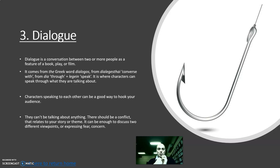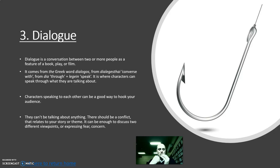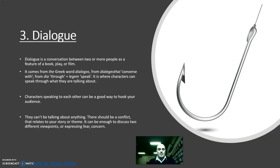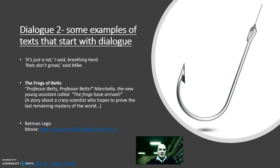Dialogue — this is the conversation between two or more people. It comes from the Greek word 'dia' meaning 'through,' and characters speaking to each other can be a good way to hook your audience. The dialogue can't be about just anything — there should be a conflict that relates to your story or theme. It can also be enough to discuss two different viewpoints or express fear or concern about something. Here's an example: 'It's just a rat,' I said, breathing hard.